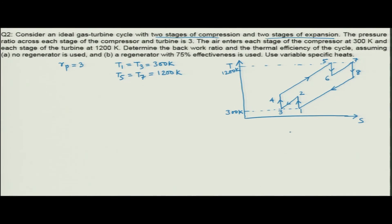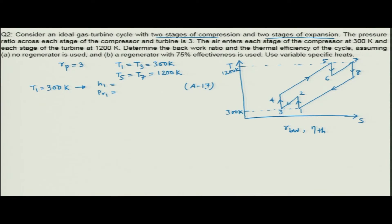We have to find the back work ratio and thermal efficiency of the cycle. There are two parts: first without a regenerator, second with a regenerator of 75 percent effectiveness. We will use variable specific heats. Starting with point 1 where T_1 = 300 Kelvin, from Table A-17 we find H_1 = 300.19 kJ/kg and the relative pressure P_r1 = 1.386.